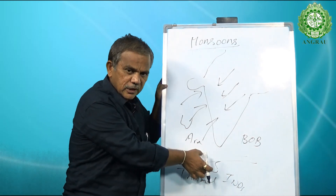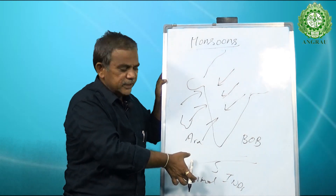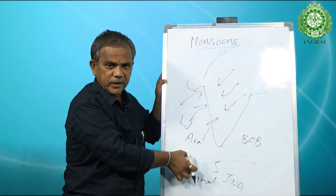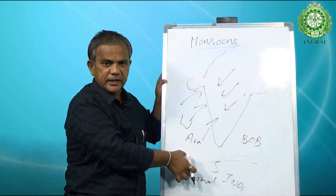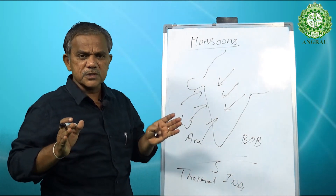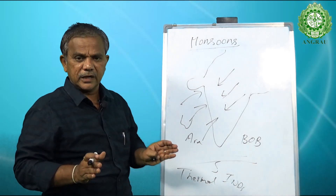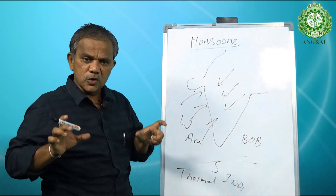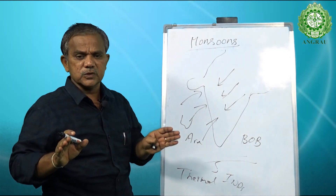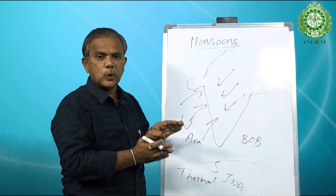There is also a particular phenomenon called the convergence of winds from the northern hemisphere and southern hemisphere at the equator, called the Intertropical Convergence Zone (ITCZ). Here, most of the time, the winds are almost silent in nature, which is one of the reasons this particular area is called the doldrums.